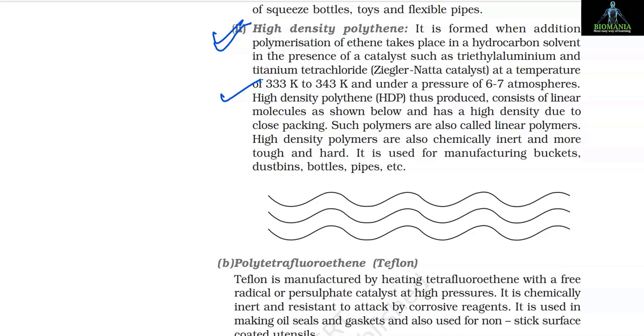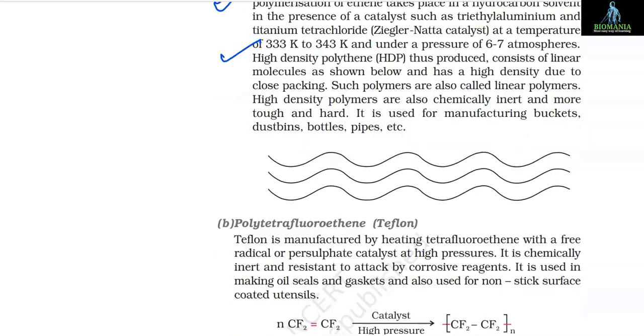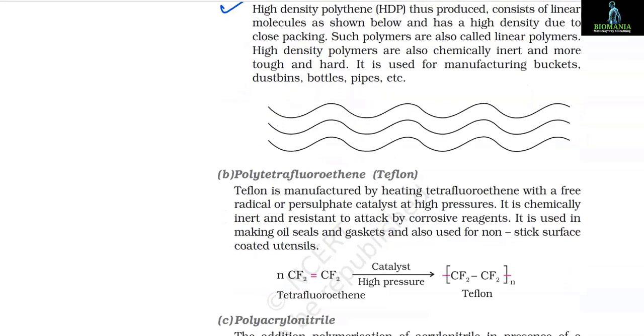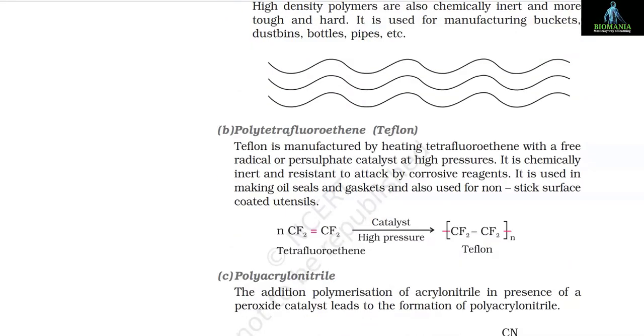High density polythene is chemically inert and more tough and hard. It is used for manufacturing buckets, dust bins, bottles, pipes, etc.